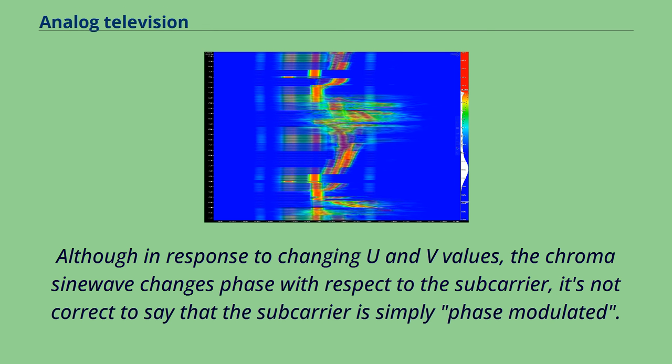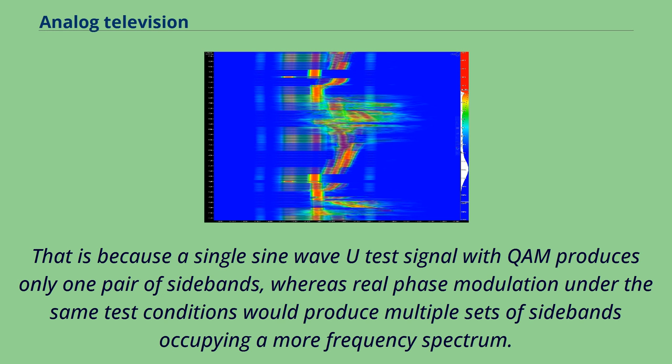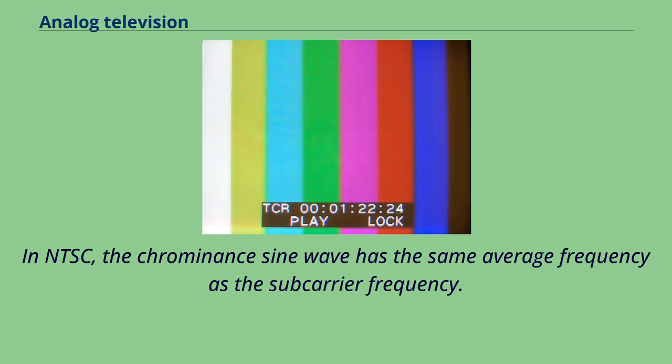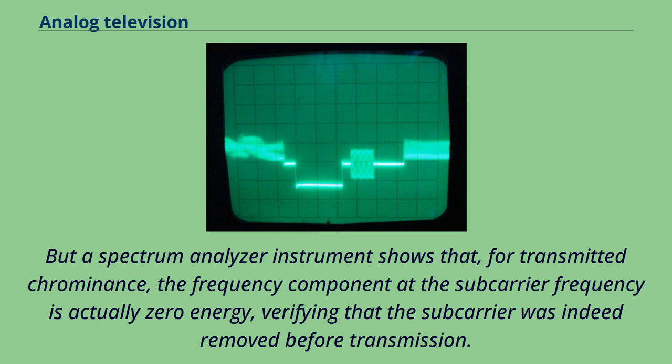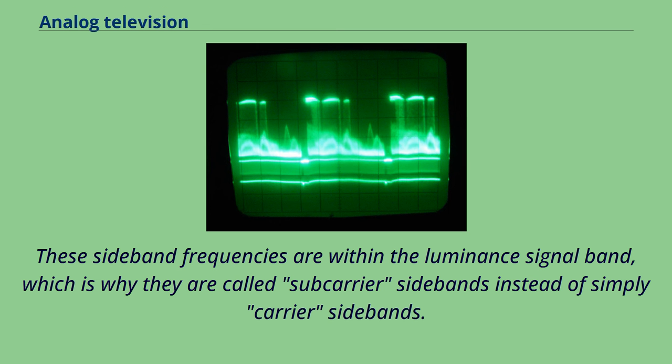In NTSC, the chrominance sine wave has the same average frequency as the subcarrier frequency. These sideband frequencies are within the luminance signal band, which is why they are called subcarrier sidebands instead of simply carrier sidebands. Their exact frequencies were chosen such that they are midway between two harmonics of the frame repetition rate, thus ensuring that the majority of the power of the luminance signal does not overlap with the power of the chrominance signal.